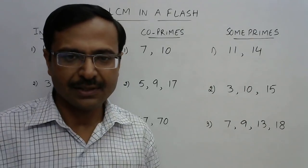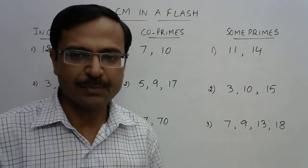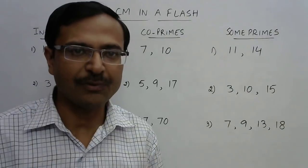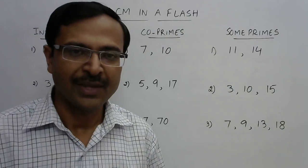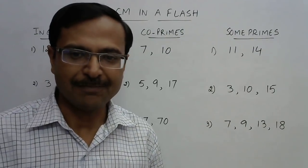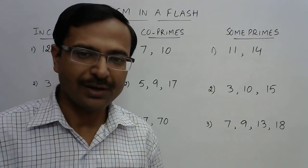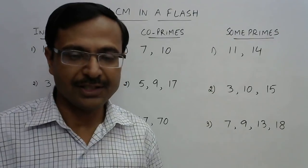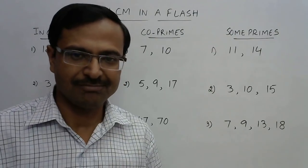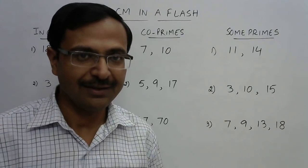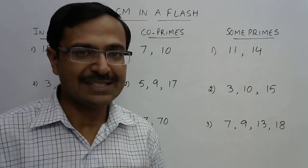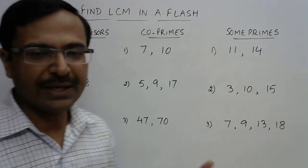Normally when fractions or rational numbers are being added or subtracted, you need to take the LCM of the denominators, and that's where we spend a lot of time. If you are ready with the LCM in 10 seconds or less than 10 seconds, then the problem can be solved very easily and quickly. So let's see how we can find the LCM of some numbers in a flash.